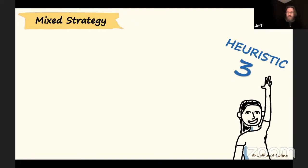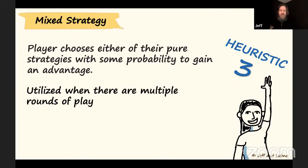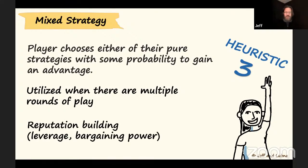That brings us to our third heuristic: mixed strategy, where you use any of your strategies — in this case, paper, rock, or scissors — mixing them with some probability to gain an advantage, to appear predictable or unpredictable, maybe lure them into a trap. You utilize this when there are multiple rounds of play. Reputation and motivation are going to be key elements of leverage and building power.